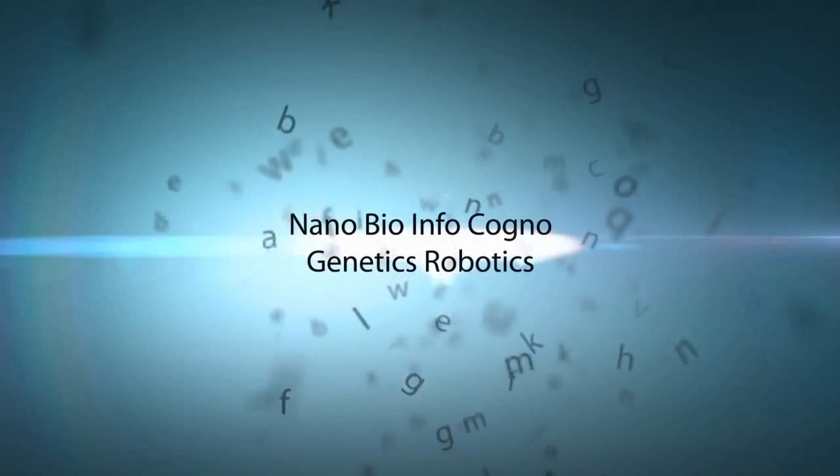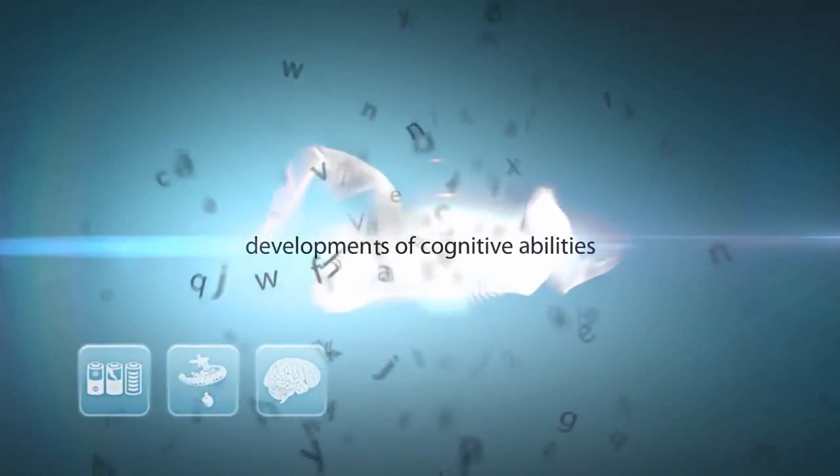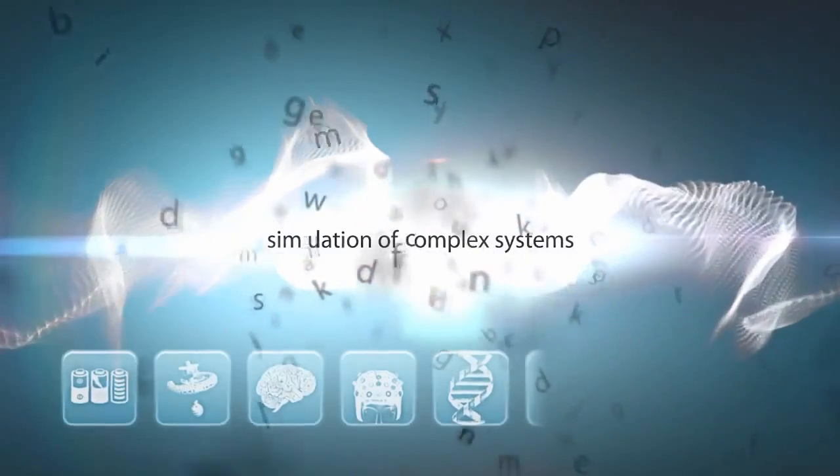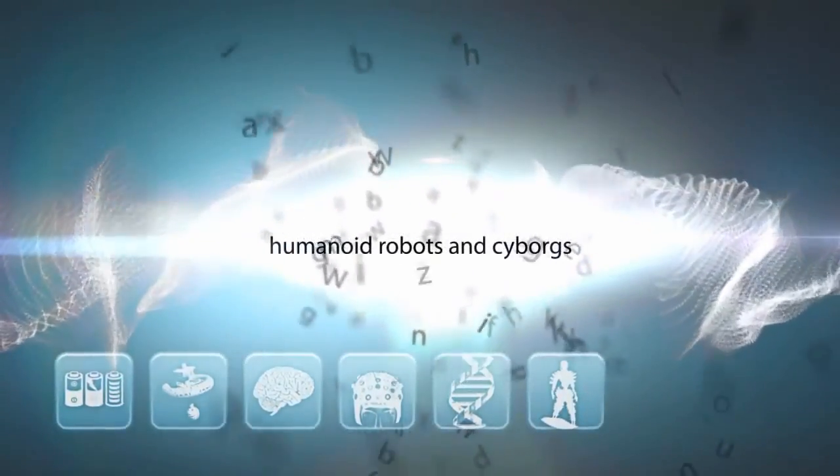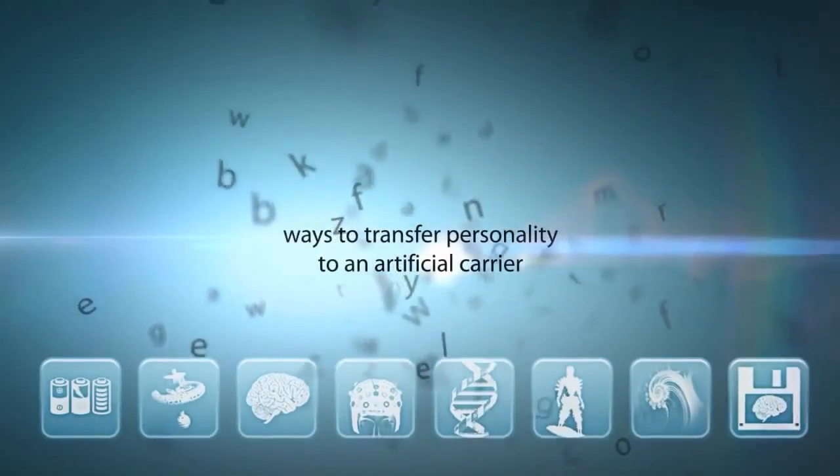Nanotechnology, biotechnology, information technology, cognitive technology, genetics and robotics. Doing so will allow us to find new sources of energy, create fundamentally new architecture and transportation, allow unprecedented developments of human cognitive abilities, refine artificial intelligences and brain-computer interfaces, simulate complex systems, create humanoid robots and cyborgs, and with the help of nanorobots we may develop manageable matter and find ways to transfer one's personality to an artificial carrier.